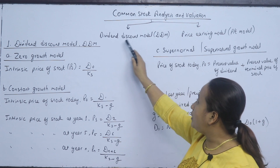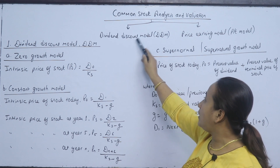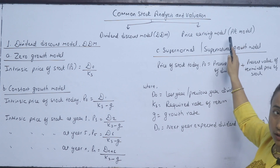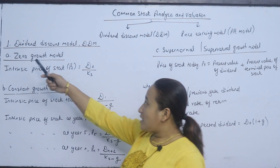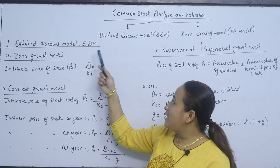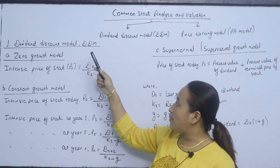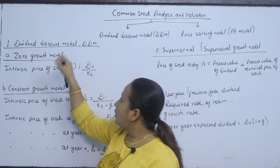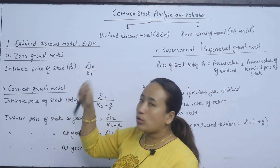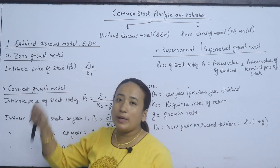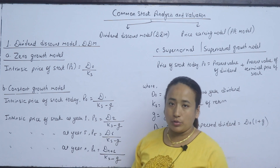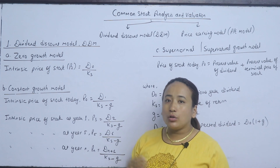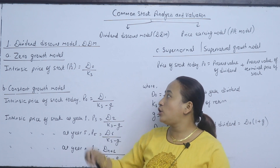This is the Dividend Discount Model, which is important. The other model is the Price Earning Model. We are going to talk about the DDM method, then Stock Valuation, the Dividend Basis model — both the base model and the growth model.